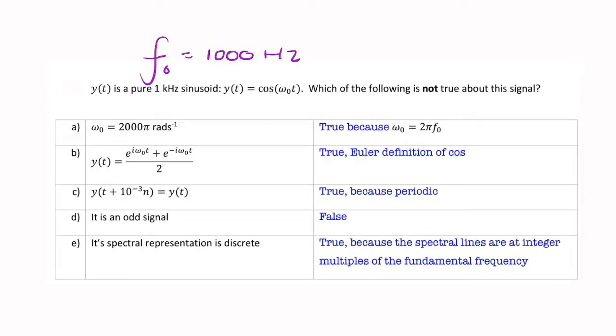Those are the only two things we know about the signal. We know it's a cosine, and we know its frequency is 1,000 hertz.